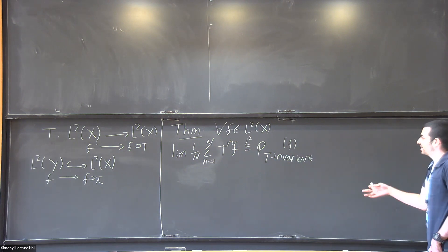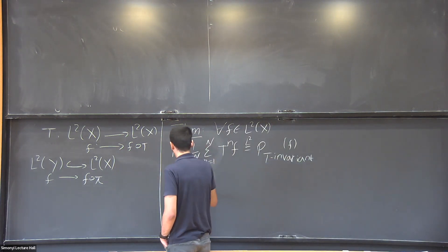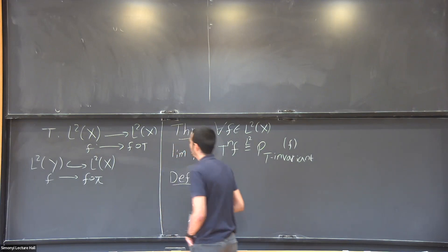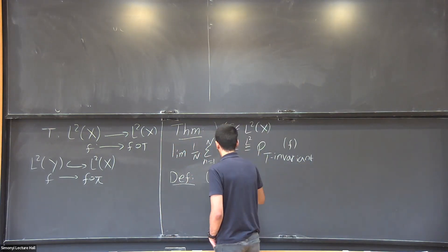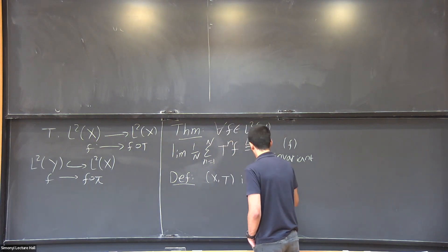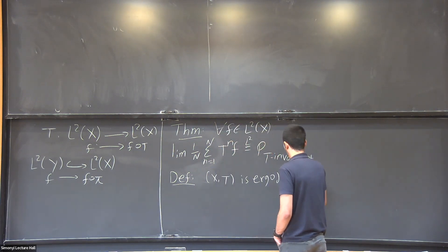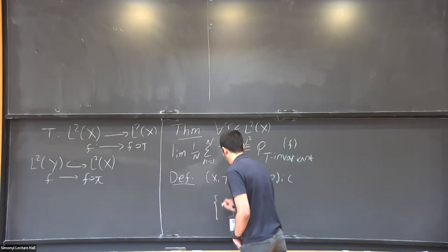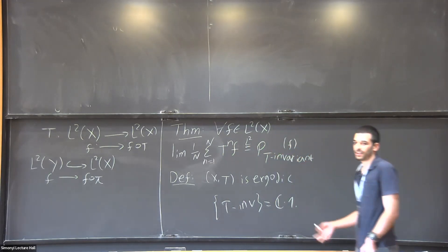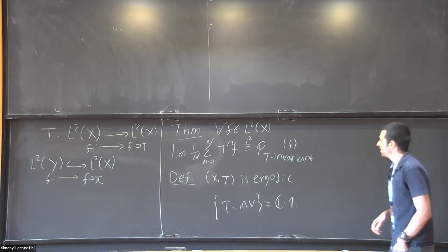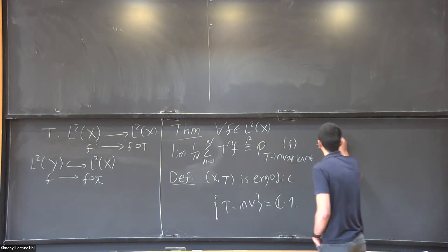And that's also a good time to give a definition. So in ergodic theory, we like to assume that our systems are ergodic, and this means that a system is ergodic if the invariant functions are just the constants. In that case, we can get a slightly nicer result. So this just equals to the integral of f.